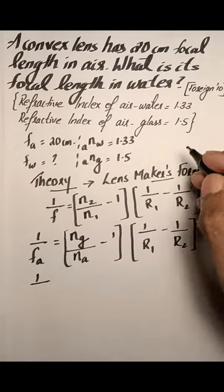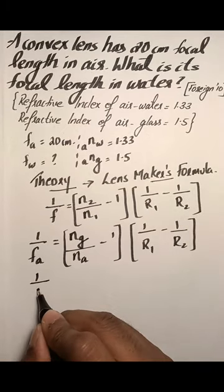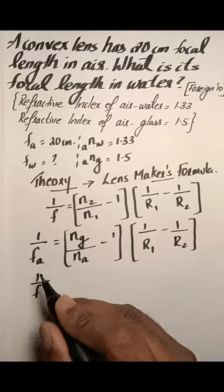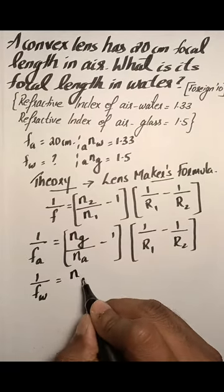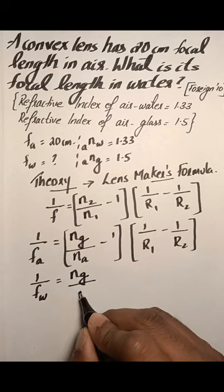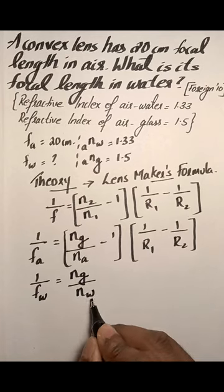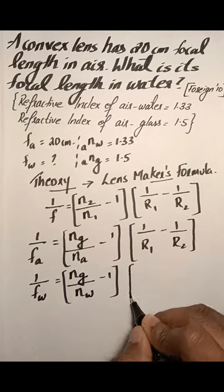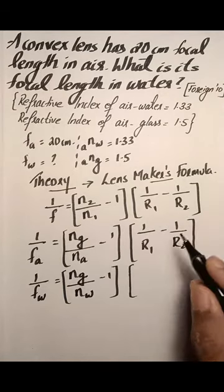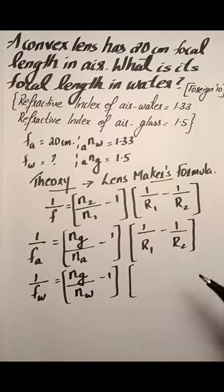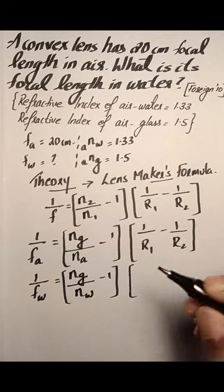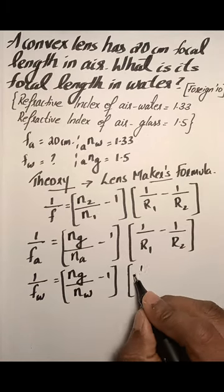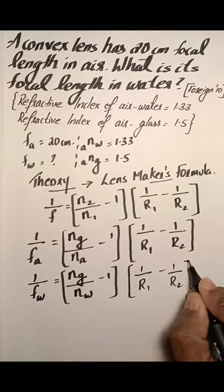Next, we apply the formula for the focal length of the lens in water, let it be F_W. The refractive index of glass divided by the refractive index of water, minus 1, multiplied by 1 over R1 minus 1 over R2. The radii of curvature won't change whether the lens is in air or water, since the material and curvature of the lens remain the same. This is equation 2.